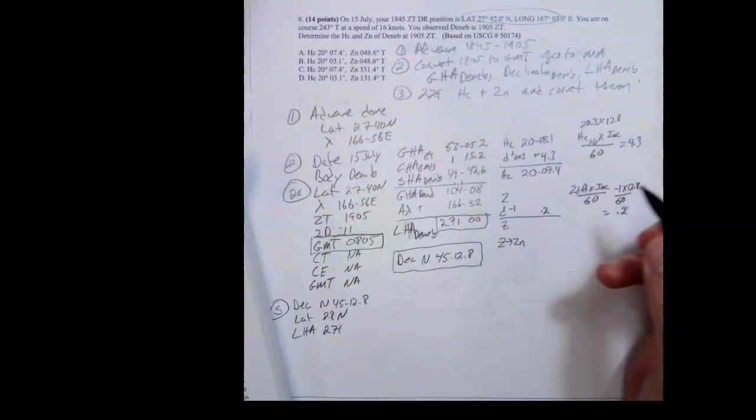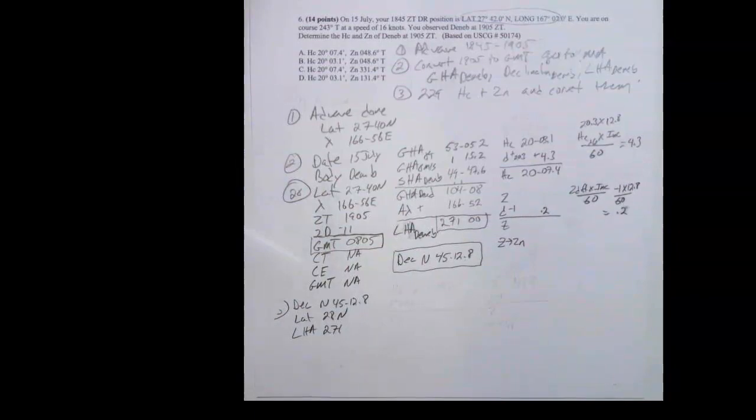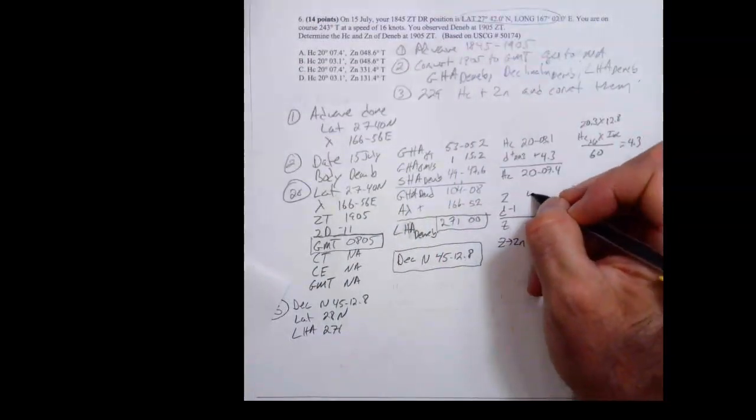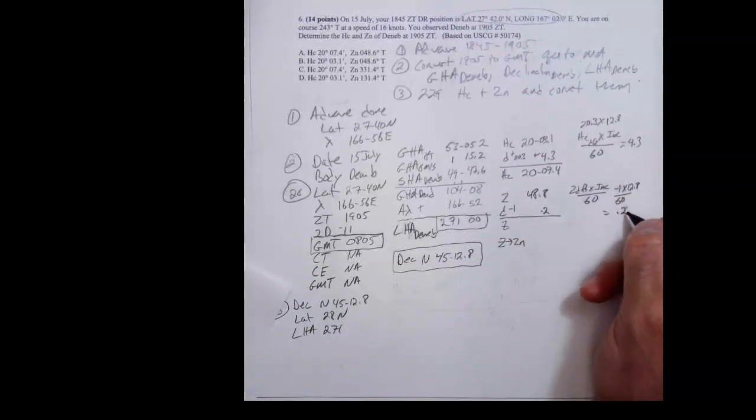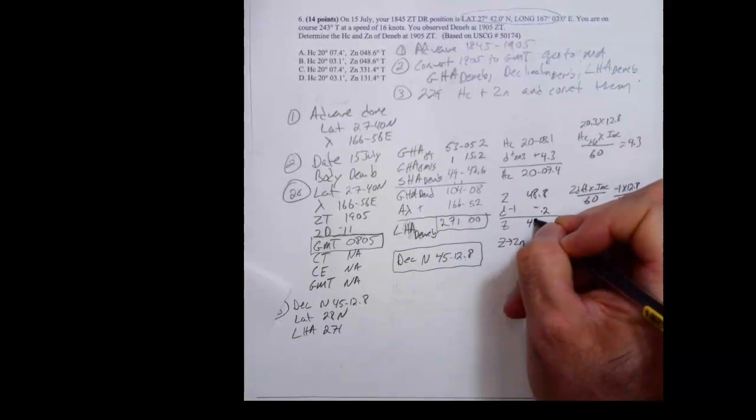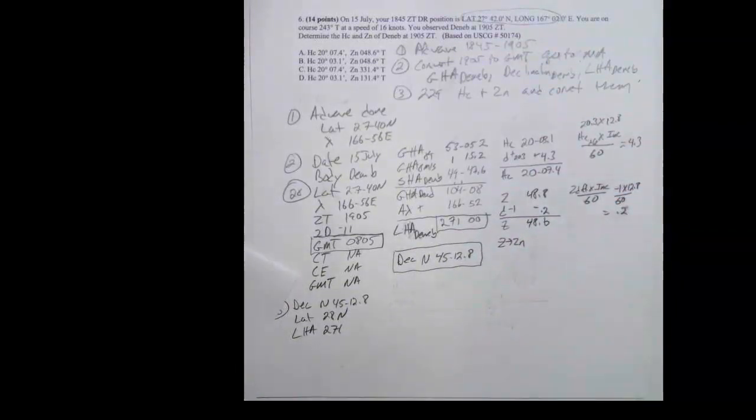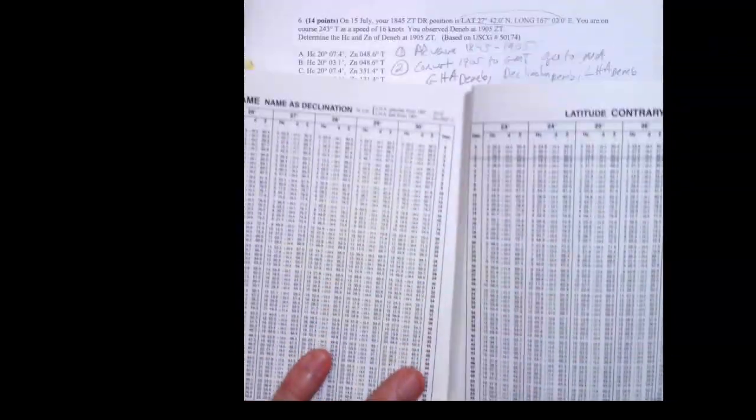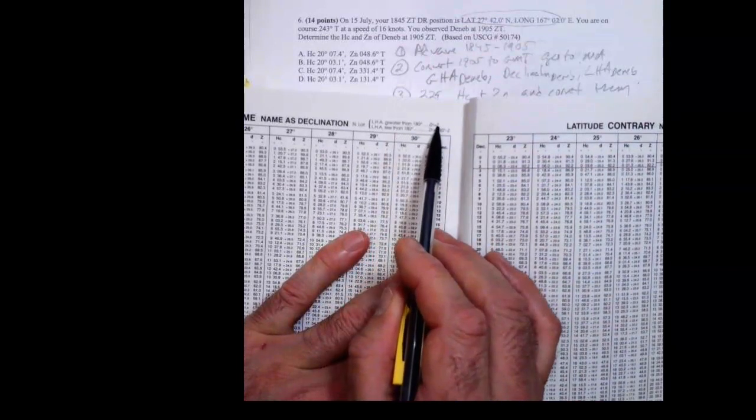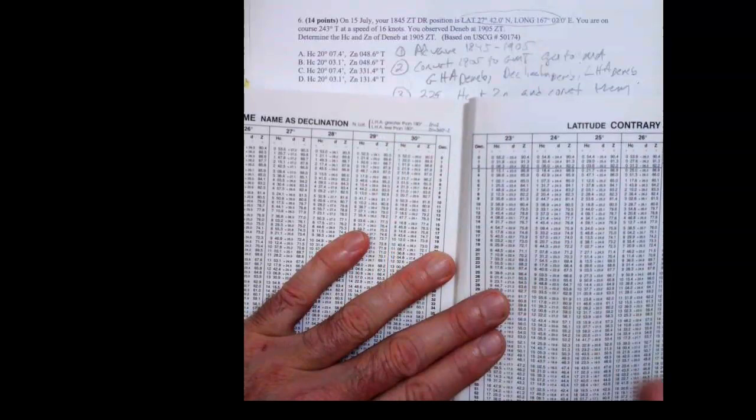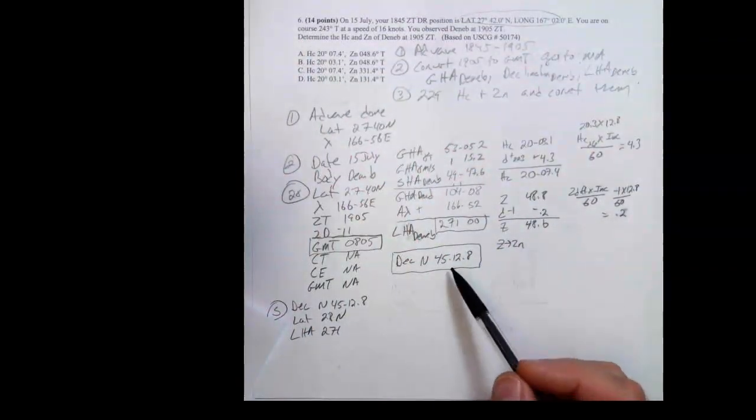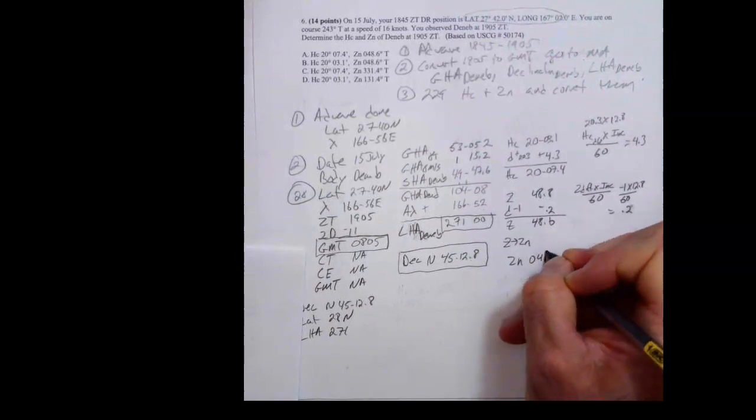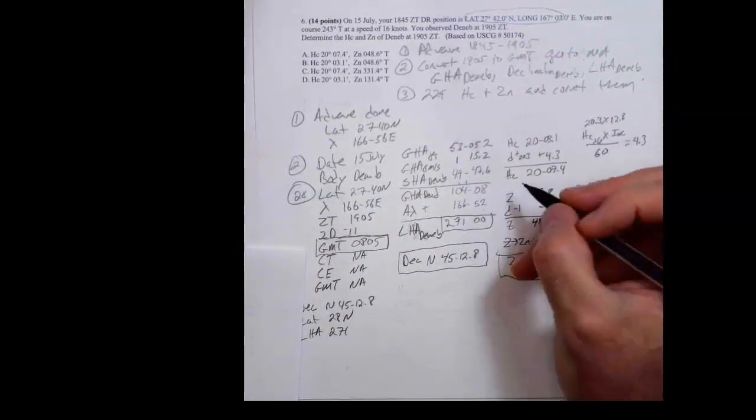So that becomes 0.2. Now, the thing I didn't do is I didn't write in my Z. My Z was 48.8'. Now this is a minus. So the correction is 0.2, but it's minus. So that becomes 48.6'. Now I got to go Z to Zn. So I'll use this formula here. Since I'm in northern latitudes, if LHA is greater than 180, Zn equals Z. If LHA is less than 180, Zn equals 360 minus Z. Let's see what I've got. My LHA is 271, so it's greater. So Z equals Zn. So then, therefore, Zn is 048.6°, and that is the answer. And that's how you do that problem.